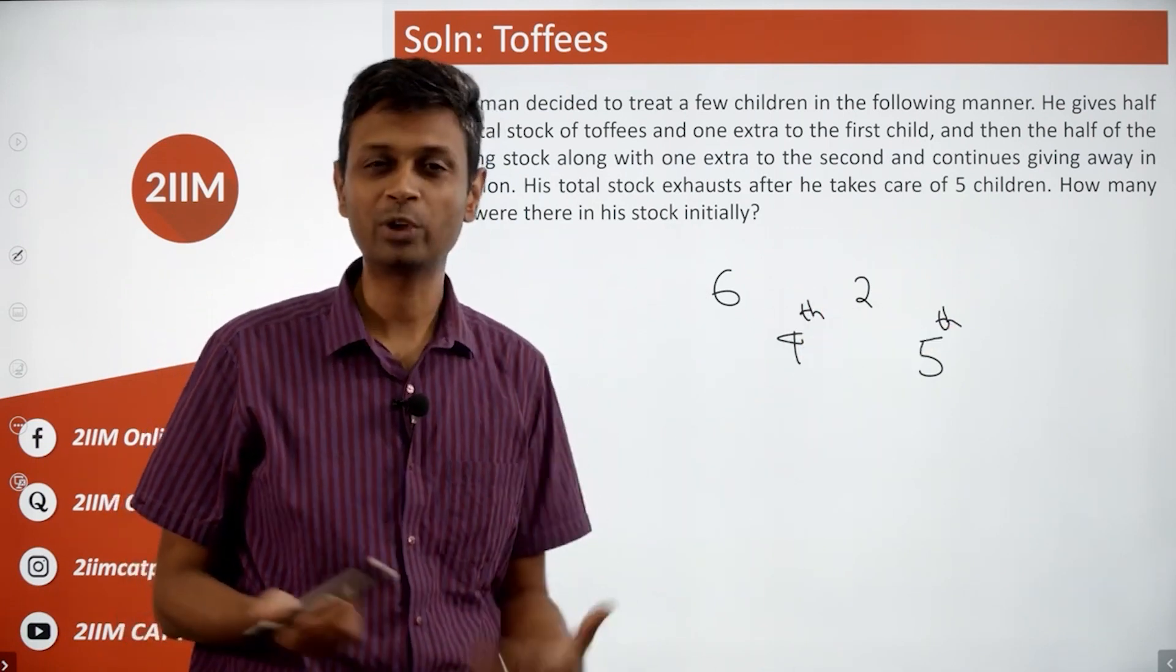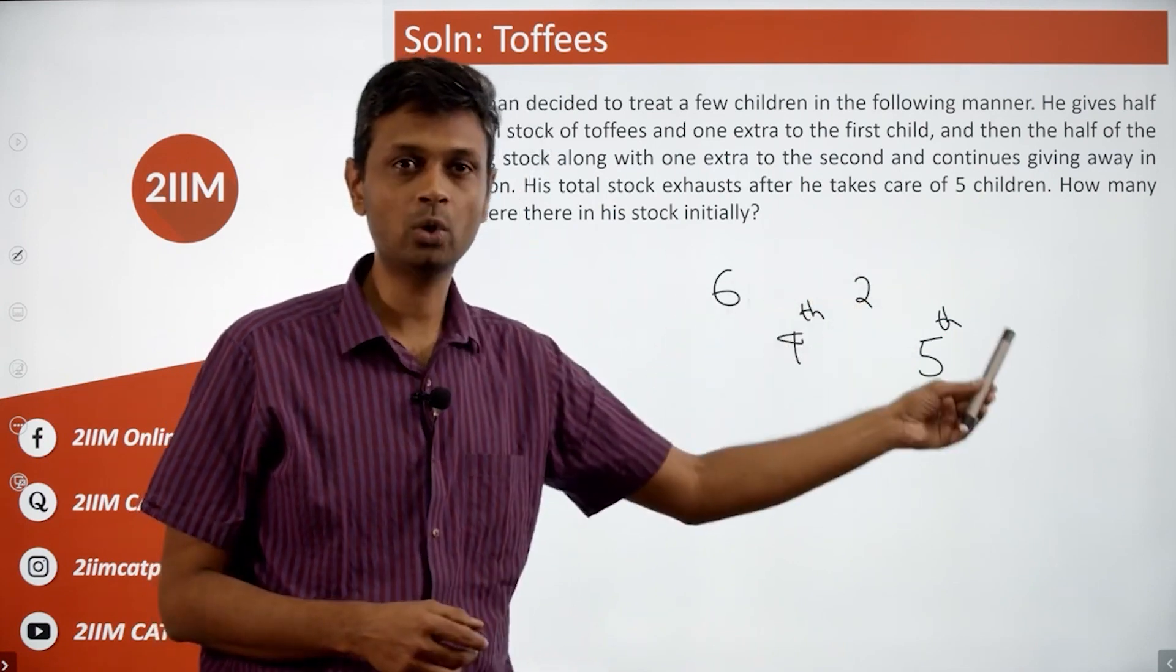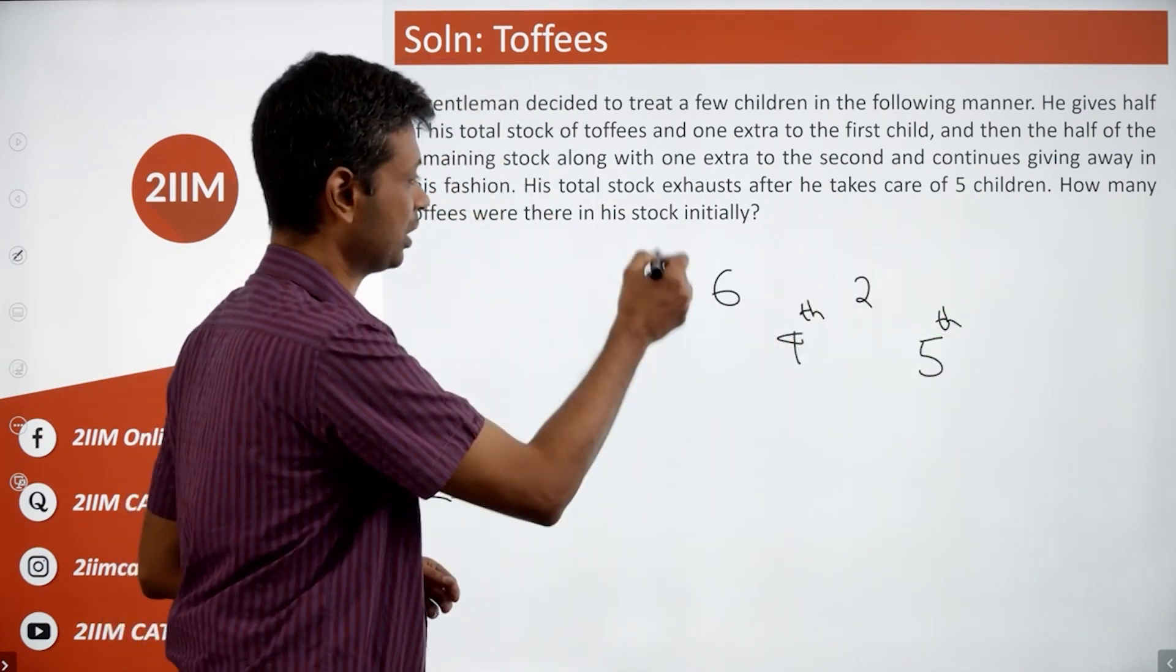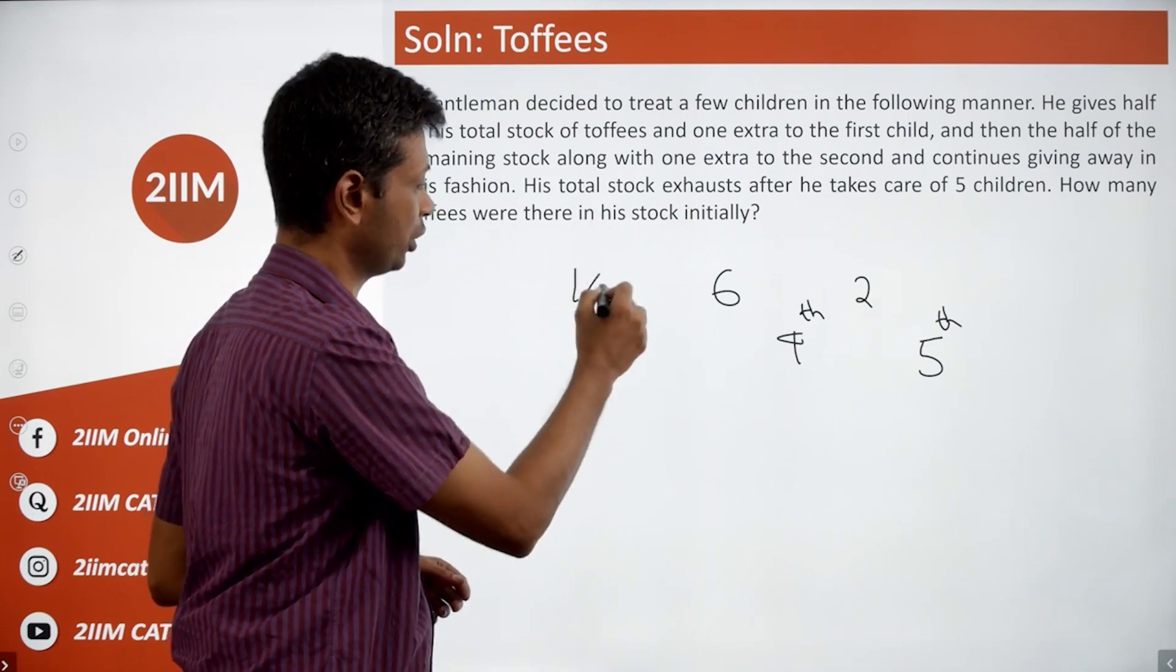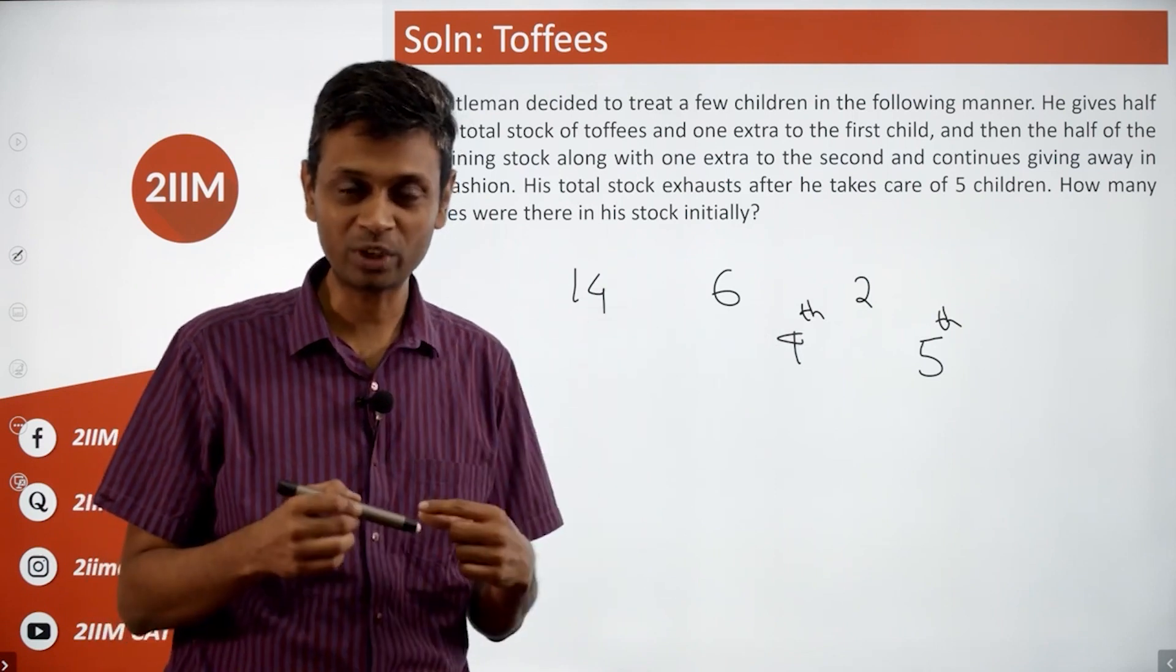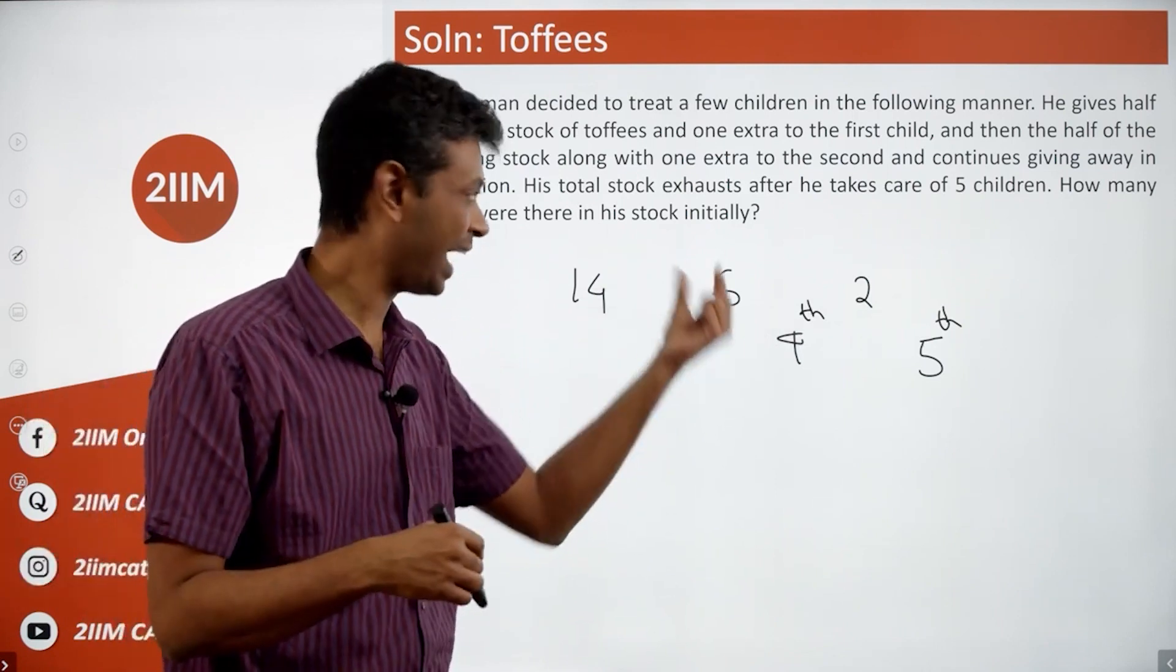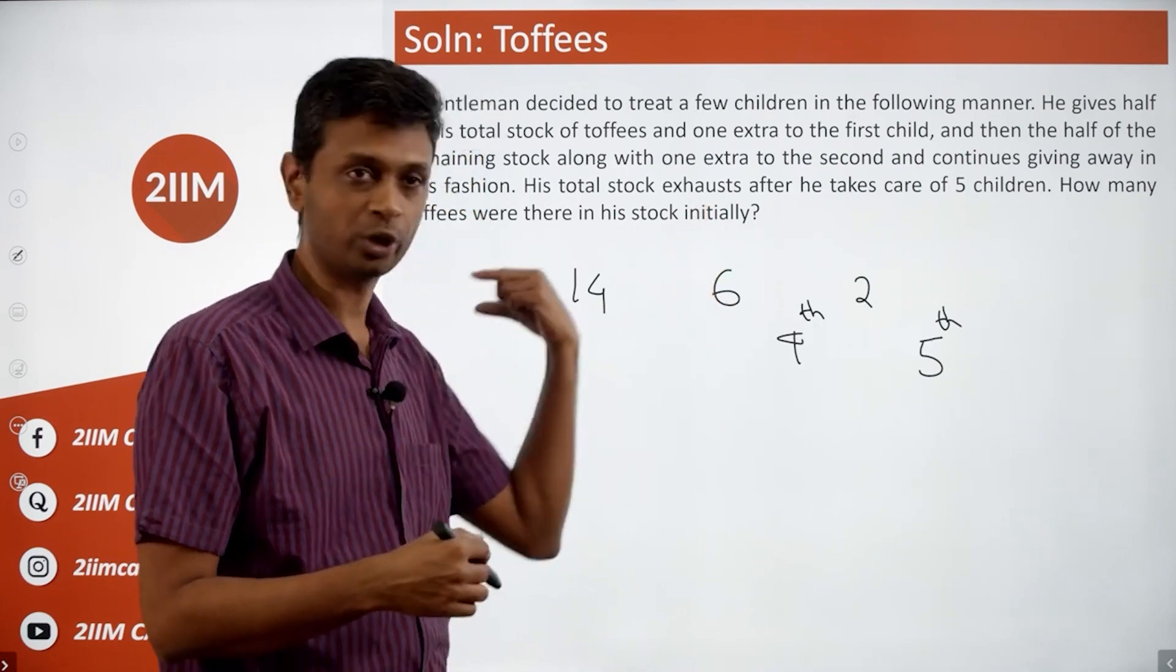Now we know the mechanism. Two plus one into two, six plus one into three. This is into two. Six plus one, seven into two is fourteen. To six, add one, seven into two is fourteen.